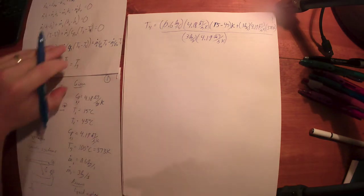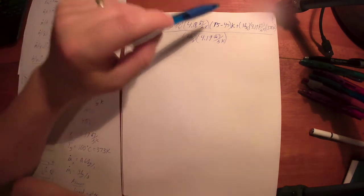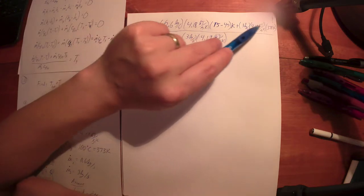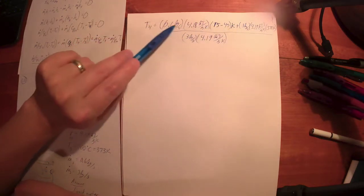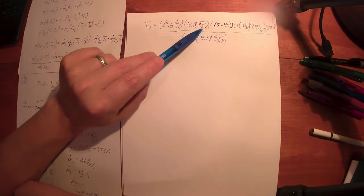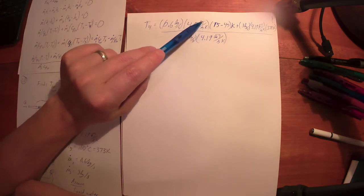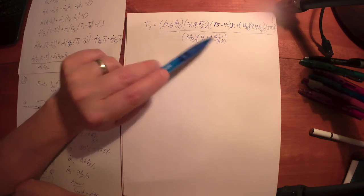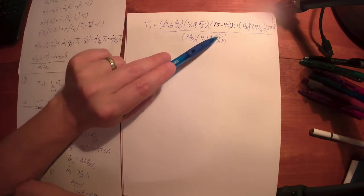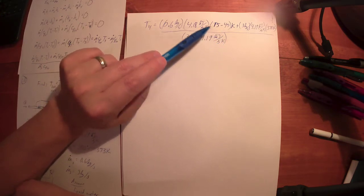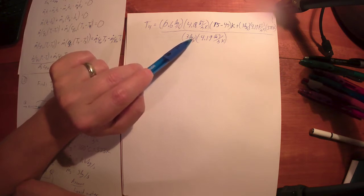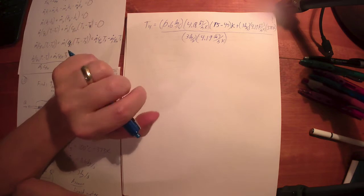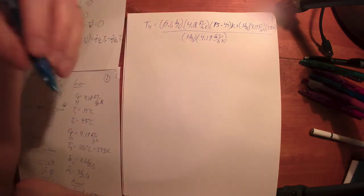Now let's look at the units. On top, the Kelvins go away and the kilograms go away — same units on all terms — leaving kilojoules per second on top. On the bottom, kilograms go away, leaving kilojoules per second per Kelvin. So I have kJ/s on top and kJ/s per Kelvin on the bottom, which gives me one over one-over-Kelvin — just Kelvin. The denominator of the denominator becomes the numerator.